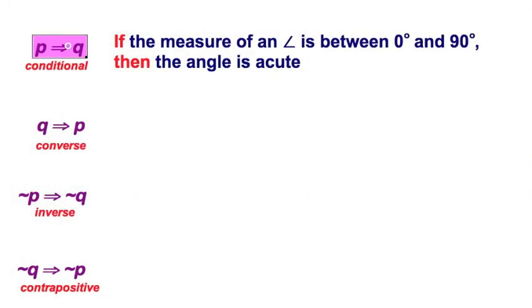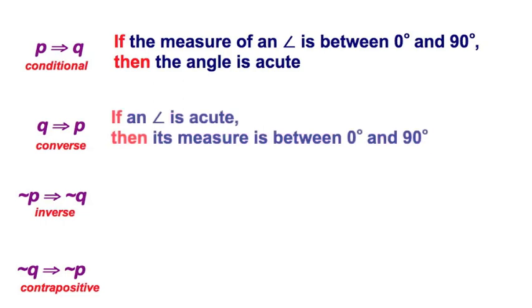Let's go look at another one and compare. Let's start with this conditional statement, and I'm going to say that the P, in this case, the hypothesis, is if the measure of an angle is between 0 and 90, then the Q, my conclusion, is the angle is acute. I can reverse that, taking the converse, if an angle is acute, then its measure is between 0 and 90.